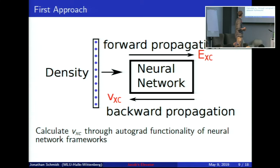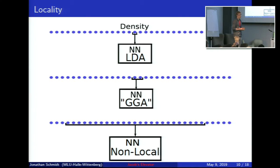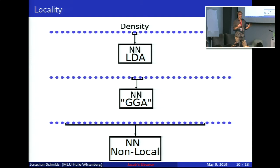Of course we can't take the complete density as input. We could do an LDA or GGA, but many people have already put a lot of thought into those. Instead we want to go more non-local: we take some part of the density, put it into our neural network, get a result, scan the system, and sum over local energies — even though they are quite non-local compared to an LDA — then derive the whole sum to get our potential.